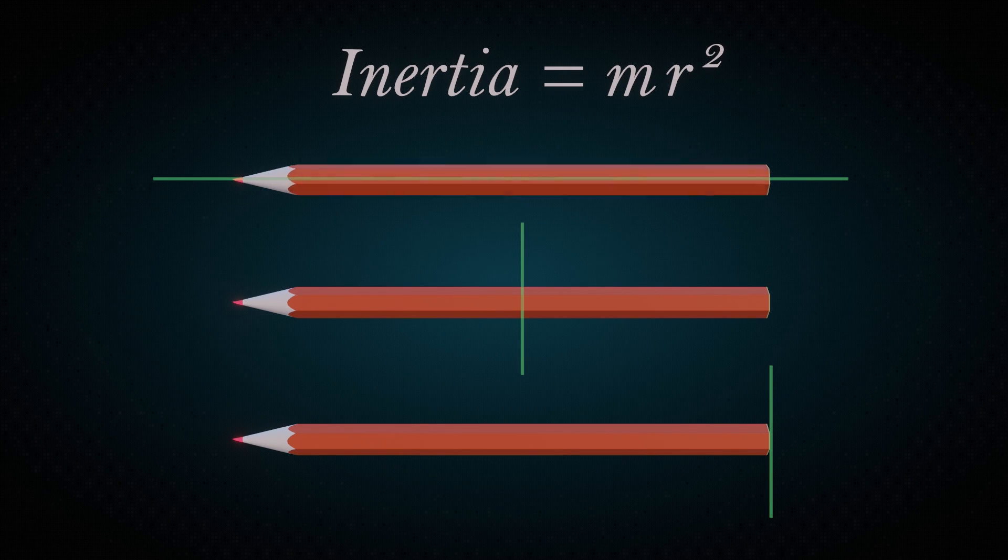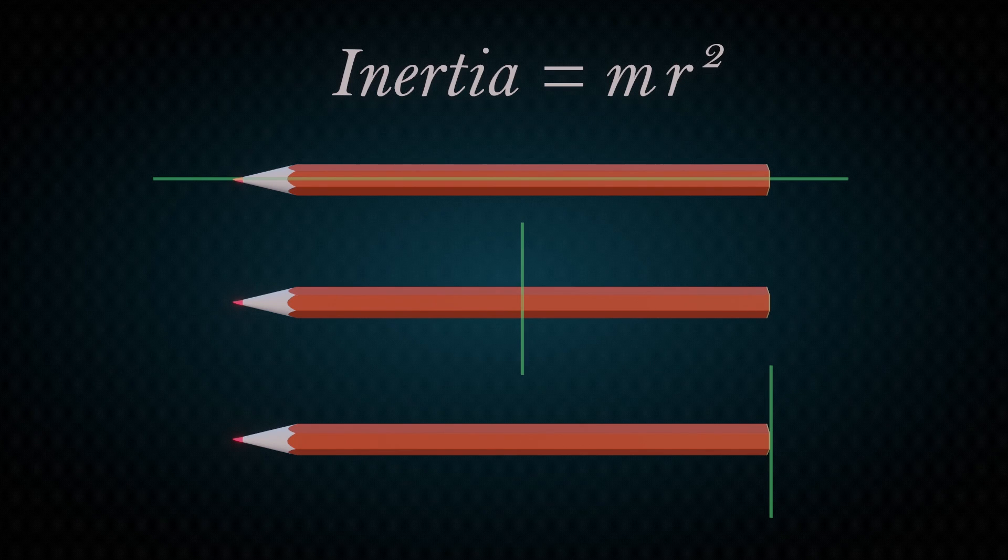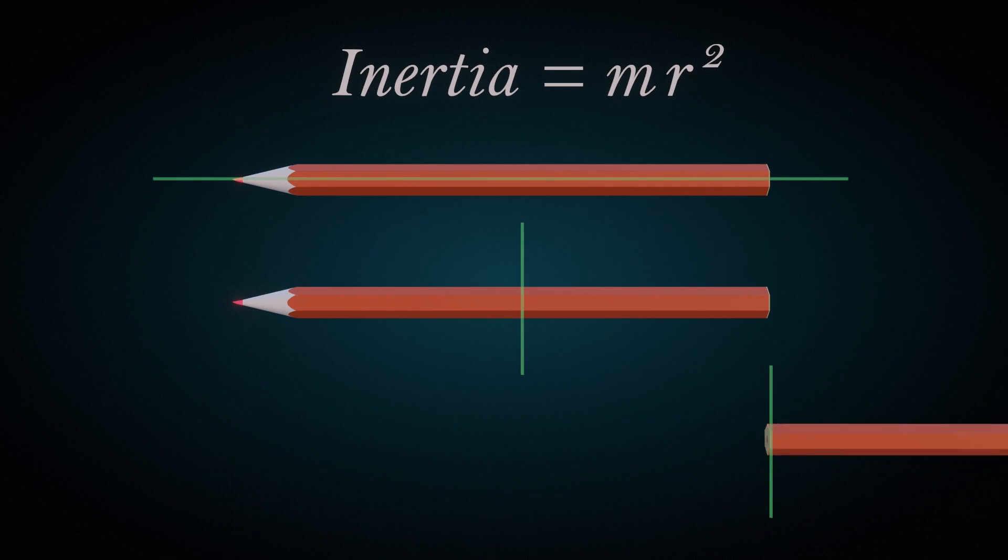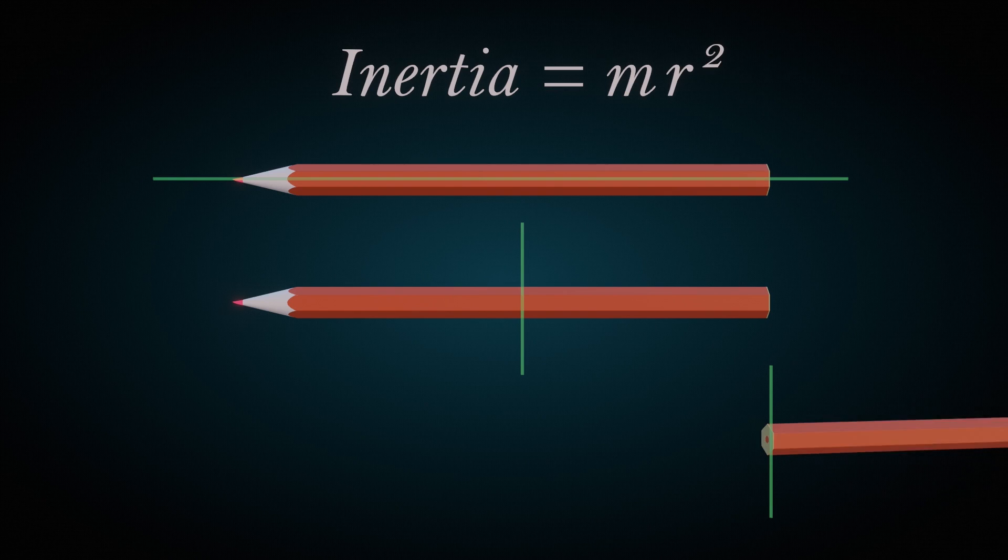So the first pencil is easy to rotate and stop because its rotational inertia is smaller, whereas the third pencil is difficult to stop because its rotational inertia is greater.